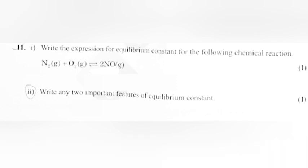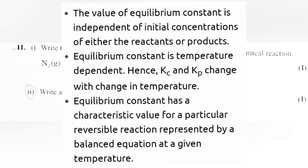2. Write any two important features of equilibrium constant. Answer: The value of equilibrium constant is independent of initial concentration of either the reactant or products. Equilibrium constant is temperature dependent. Hence, Kc and Kp changes with change in temperature. Equilibrium constant has a characteristic value for a particular reversible reaction represented by a balanced equation at a given temperature.